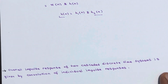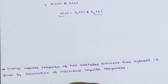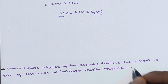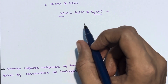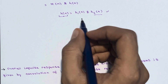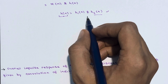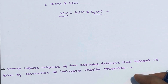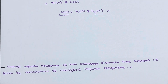By this we can conclude that the overall impulse response of two cascaded discrete-time systems is given by the convolution of the individual impulse responses. This is all about the cascade connection of systems. If you have any doubts, you can ask in the comment section. Thanks for watching.